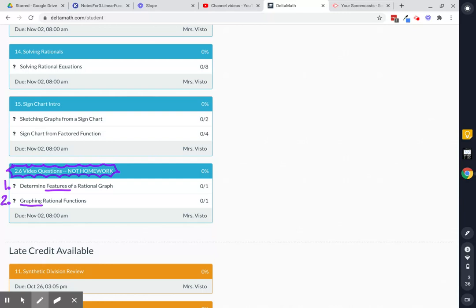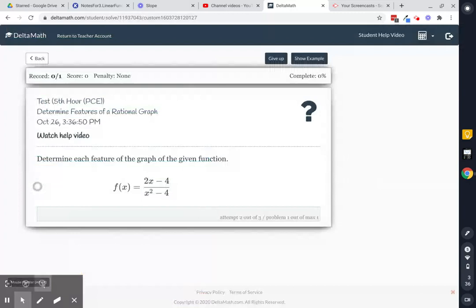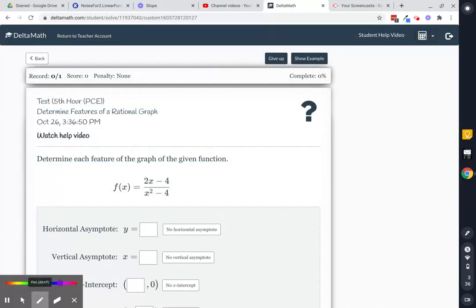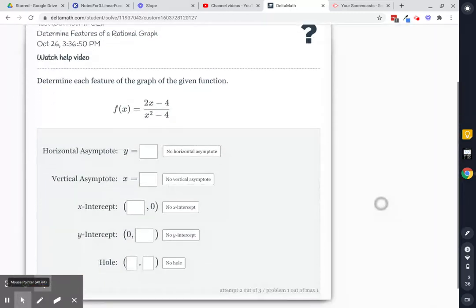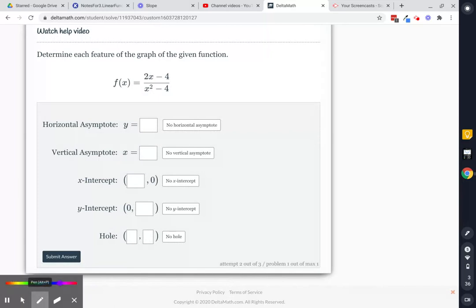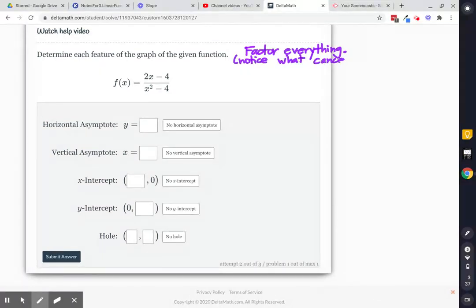Here we go. I'm just going to do features in this one. So here's my original problem: 2x minus 4, over x squared minus 4. The very first thing we want to do is factor everything. And then I want you to notice what cancels, but we're not going to cancel it yet.